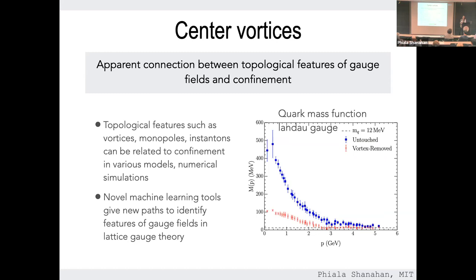There are really interesting results from other groups connecting topological features to confinement. Here is a figure from the Adelaide group showing the quark mass function in Landau gauge with a bare quark mass of 12 MeV. The difference between the two curves is that in one, the field configurations were distorted: all gauge links were projected to maximal center gauge, the center element factorized and removed, essentially eliminating all dynamical mass generation. This hints at some connection between center vortices, dynamical chiral symmetry breaking, and mass generation — though much more work is needed.